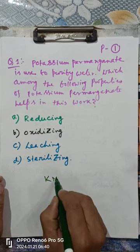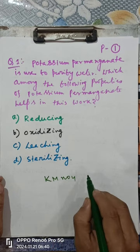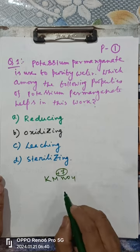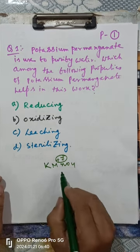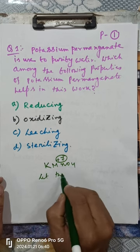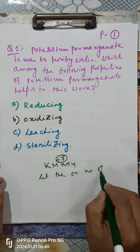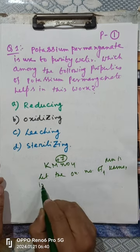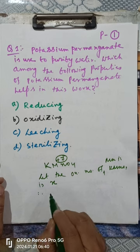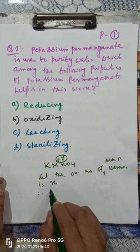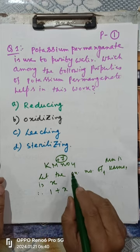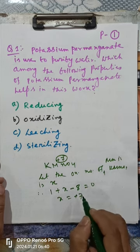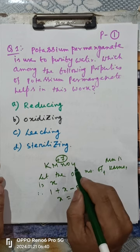Potassium permanganate has an oxidation number of manganese equal to plus seven. To determine this: let the oxidation number of Mn in KMnO4 be x. Then x + 1 + (4 × −2) = 0, which gives x + 1 − 8 = 0, so x = +7. The oxidation number of manganese is +7, which is very high.